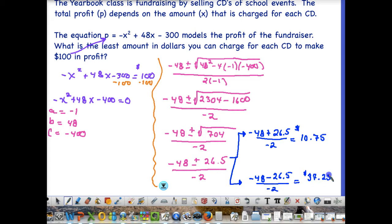Well, if we read the problem, it says, what is the least amount in dollars you can charge for each CD to make $100 in profit? So if we charge $10.75, we make $100 in profit, or if we charge $37.25, we also make $100 in profit. And it may seem strange to you that we can charge either price, but I'll show you this graphically in just a minute. So obviously, if you compare these, $10.75, that'll give us $100 profit, and that is the least amount we can charge to do that. So that's what we would charge.